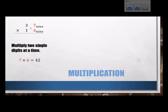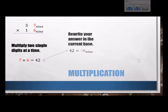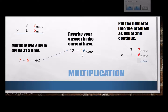For multiplication, again, multiply single digits at a time, just like you normally would. 7 times 6 is 42. Rewrite your answer in the base you're working in. In base 9, 42 is 46 base 9, because that's 4 nines for 36 and 6 more. And then put your numeral into the problem and keep going like you normally would.